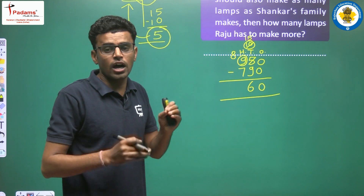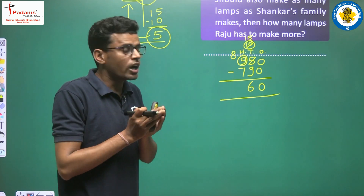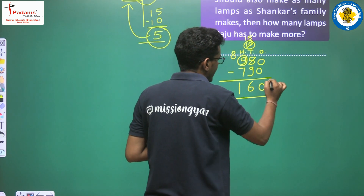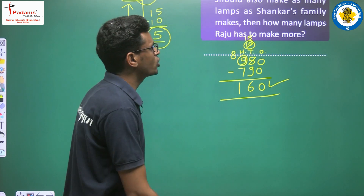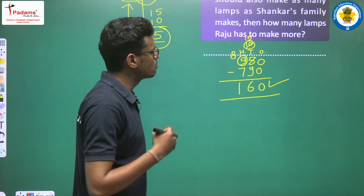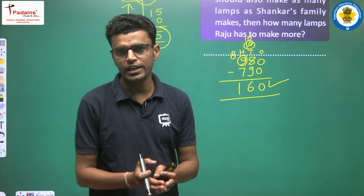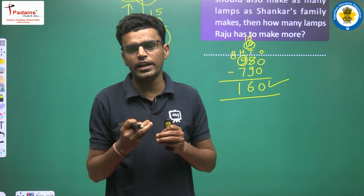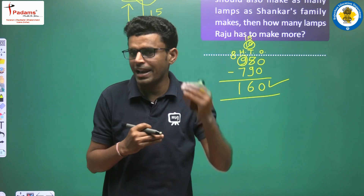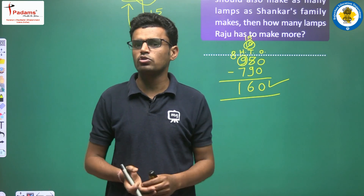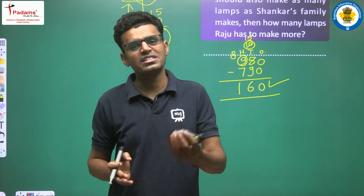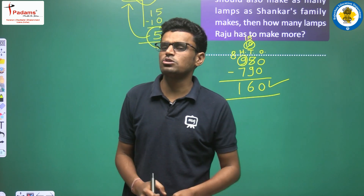What is the value of the hundreds place in the first number? That is 8 (after giving away 1 hundred as borrow, 9 becomes 8). So 8 minus 7 equals 1. So the answer is 160. Raju needs to make 160 more lamps to equal Sankar's family. This is how we find the difference between two numbers. Subtract the smallest from the biggest; if basic subtraction isn't possible, use the borrow procedure.